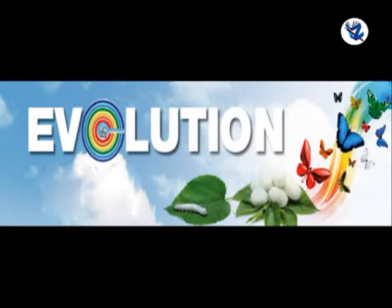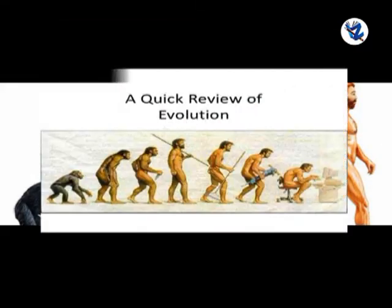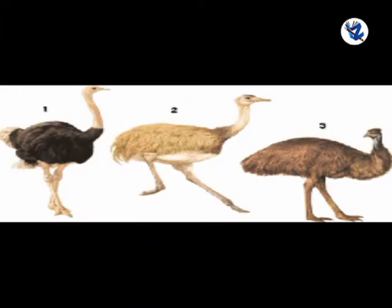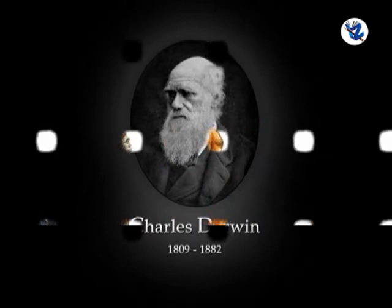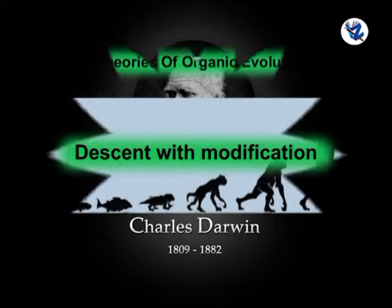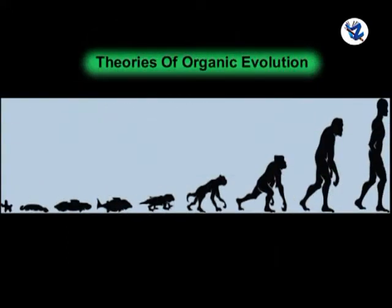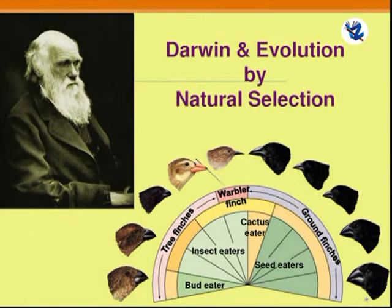Organic evolution means gradual changes. Organic evolution can be defined as slow, gradual, continuous and irreversible changes through which the present-day complex forms have descended from their simple pre-existing forms of the past. Charles Darwin used the term for evolution as descent with modification. Darwin's theory of organic evolution by natural selection is based on the following principles.